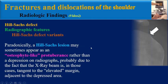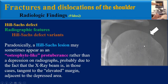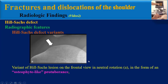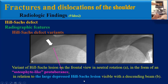Paradoxically, a Heel Socks lesion may sometimes appear as an osteophyte-like protuberance rather than a depression on radiographs, probably due to the fact that the X-ray is tangent to the elevated margin adjacent to the depressed area. This is an example of a variant of Heel Socks lesion on the frontal view in neutral position in the form of an osteophyte-like protuberance, but with a descending beam in relation to this finding we can see the large depressed Heel Socks lesion.